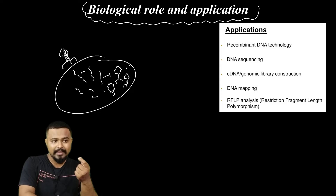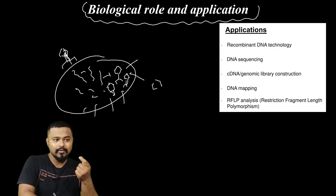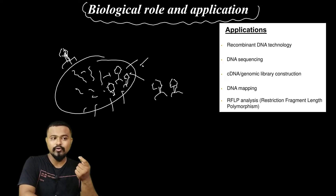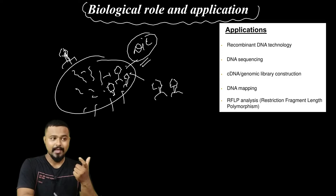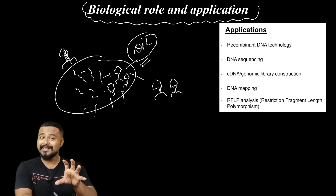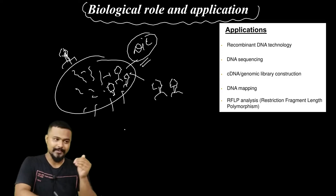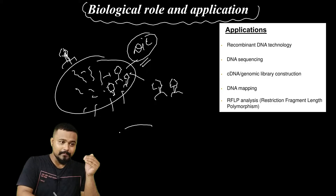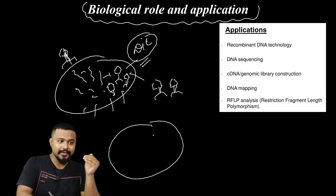Finally, bacterial cells grow and the bacteriophage starts growing as well. Eventually, bacterial cells grow and die. But the restriction enzyme plays a biological role in this process.